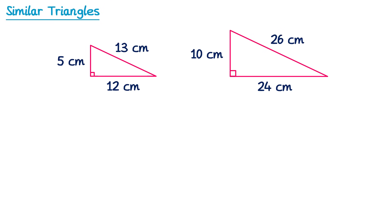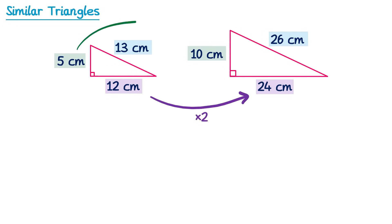Take these two triangles. If they are similar there must be a constant scale factor for enlargement from one to the other. If we match up the corresponding sides: on the base we have 12 and 24, on the left we have 5 and 10 for the height, and the hypotenuse is 13 and 26. To get from 12 to 24 we multiply by 2 — the same for 5 to 10 and 13 to 26. Since this is always the same number, these shapes must be similar.